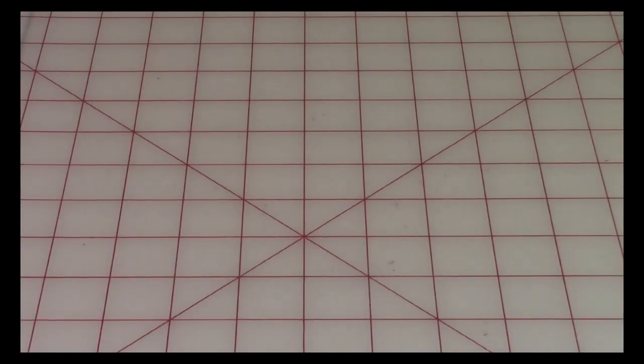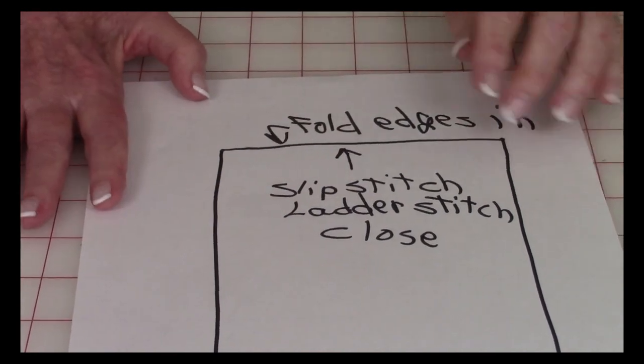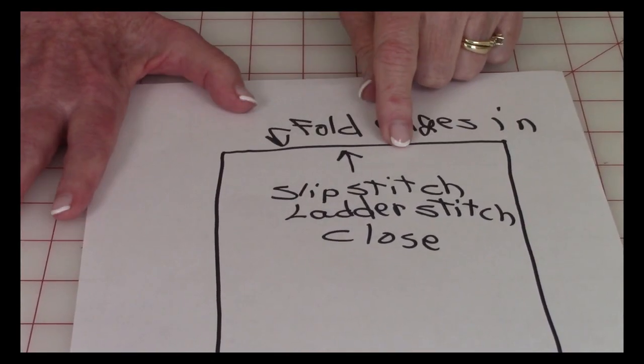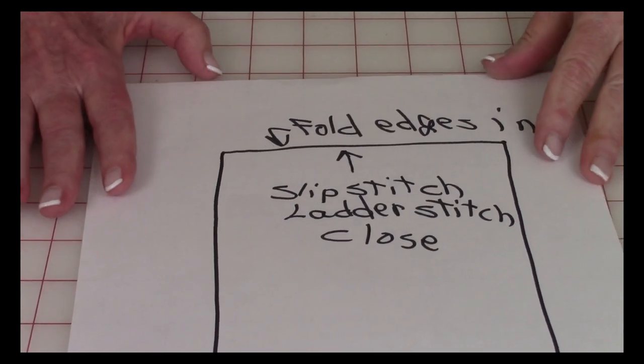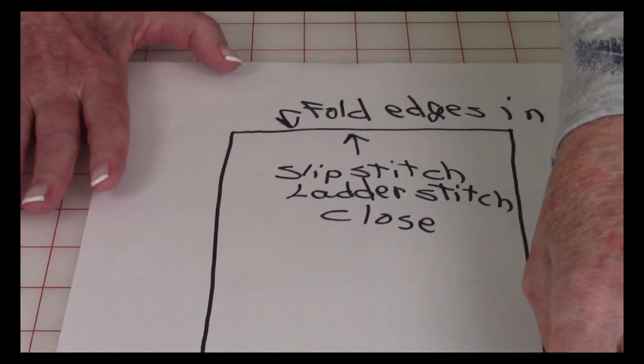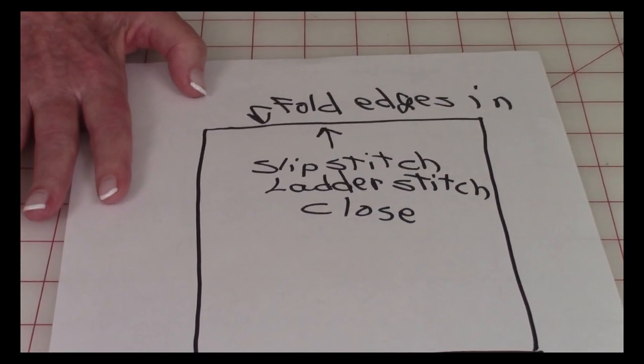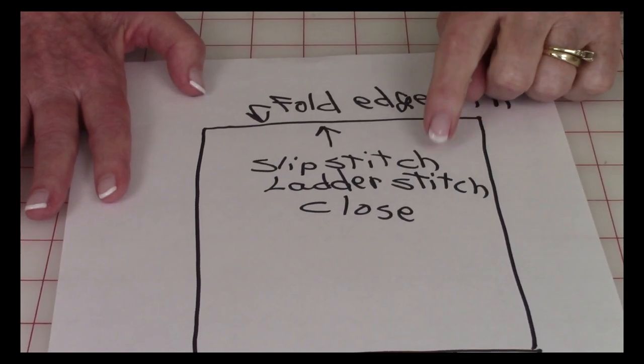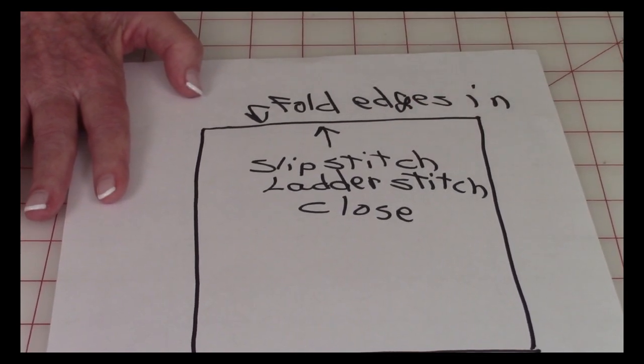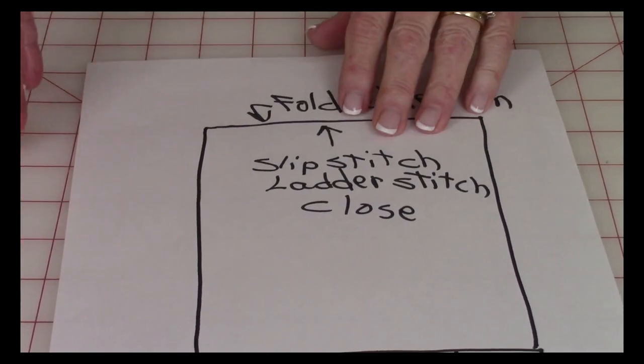Then of course turn it front side out and insert your current bed cover inside of it. Then you would want to close up the opening, so fold the edges in a half inch because you're using a half inch seam allowance. Then use a slip stitch or ladder stitch to close up that opening. If you're not sure how to do that stitch, click on the link in the upper right hand corner and I have a video that explains how to do that.